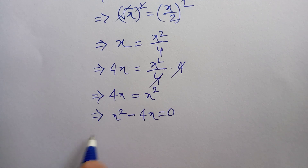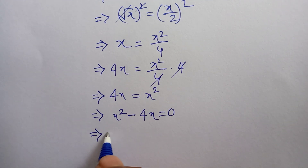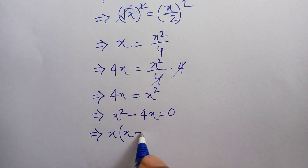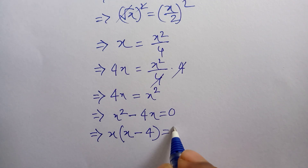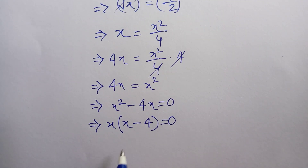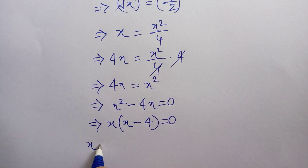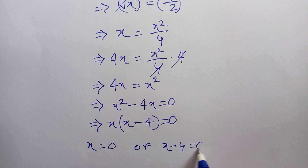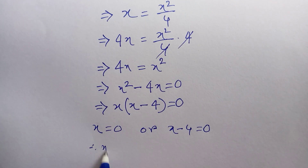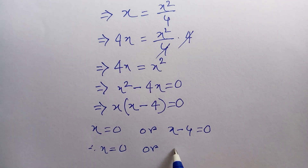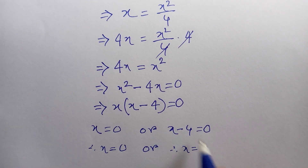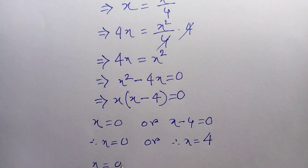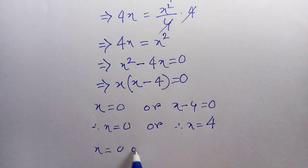Now we write x squared minus 4x is equal to 0. Taking x as common: x times (x minus 4) is equal to 0. Applying the zero product property, x is equal to 0 or x minus 4 is equal to 0, therefore x is equal to 0 or x is equal to 4. So our final answer is x equals 0 or x equals 4.